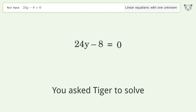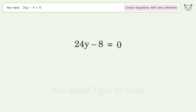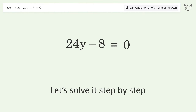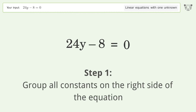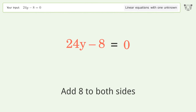We ask Tiger to solve this — it deals with linear equations with one unknown. The final result is y equals 1 over 3. Let's solve it step by step. Group all constants on the right side of the equation by adding 8 to both sides.